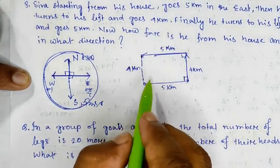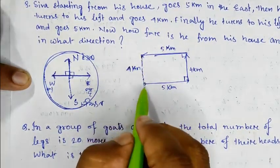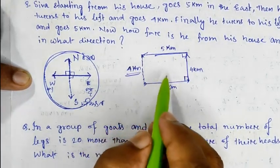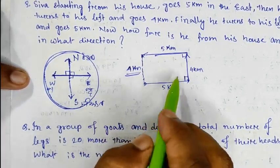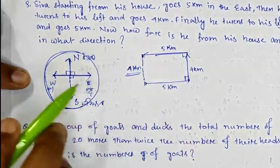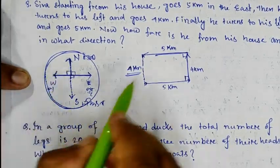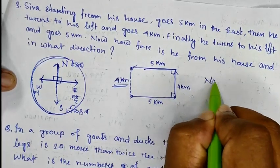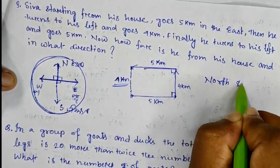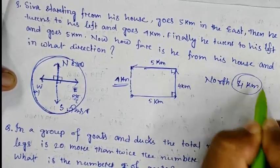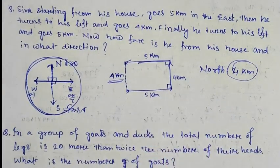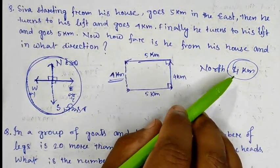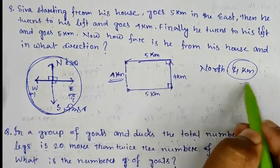We must look at the original final position. This rectangle is directly 4 km. The direction is north — 4 km away from his home in the north direction. This is our first question answered.